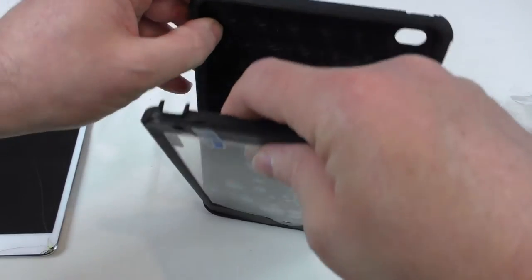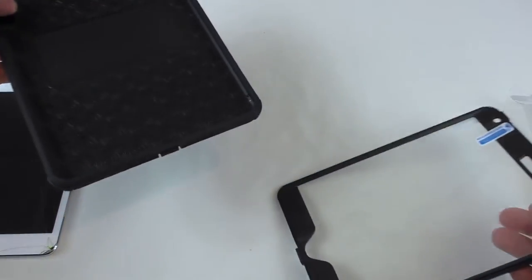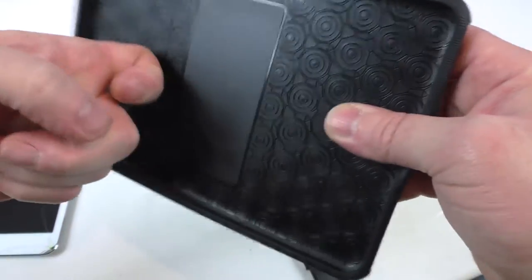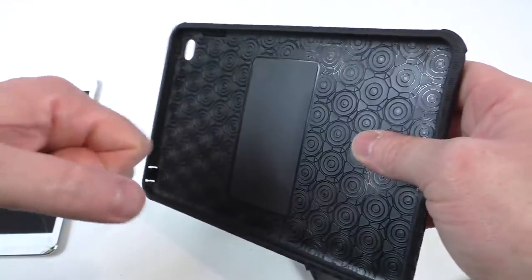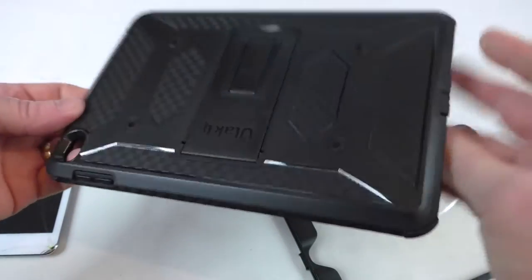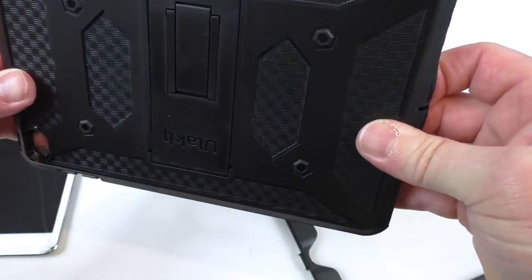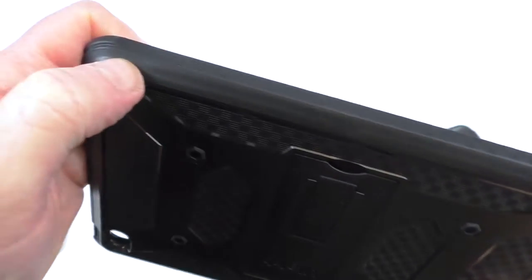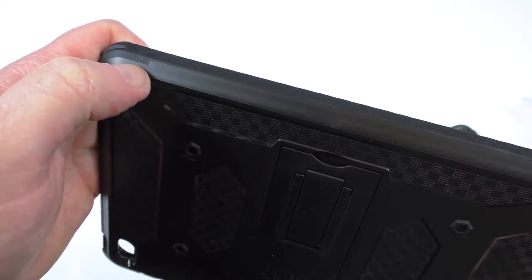It's the back of it that's very tough and then you've just got this slightly softer rubber lip. Now it's not waterproof but obviously it's going to help save with splashes and what have you. That back is so solid, I mean listen to that.